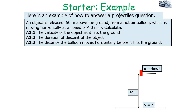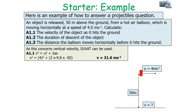Let's look at a worked example. An object is released 50 metres above the ground from a hot air balloon moving horizontally at 4 m/s. We need to calculate: the velocity of the object as it hits the ground, the duration of the descent, and the horizontal distance travelled before it hits the ground. For the first part, concerning vertical motion, we use v² = u² + 2as: v² = 4² + 2 × (−9.81) × (−50), since acceleration acts downwards and displacement is 50 m downwards.